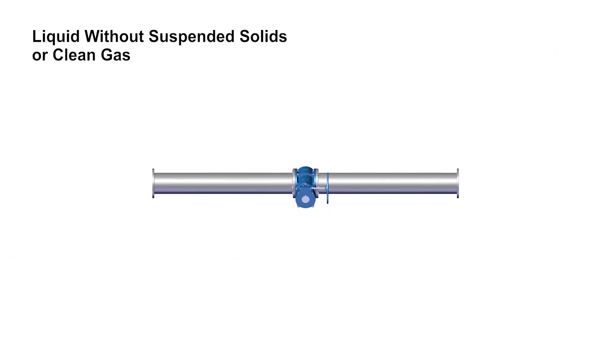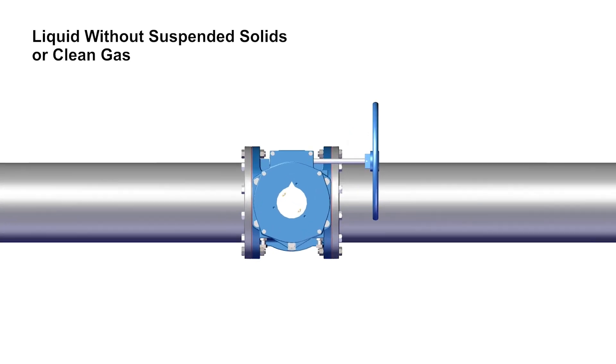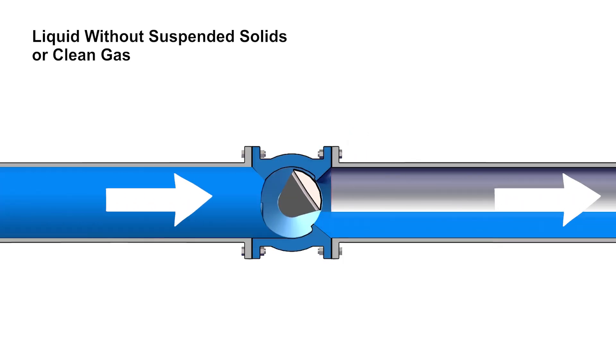If the pipeline media is a liquid without suspended solids or it's a clean gas, De Zurich suggests that the valve be oriented to have the flow toward the back side of the plug. This is true for both vertical and horizontal installations.